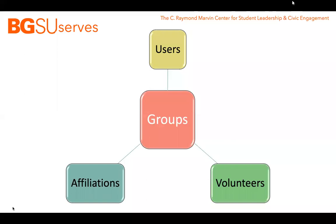Before we get into the details of profile management, event management, or volunteer management in BGSU SERVS, we need to cover a few terms that have specific meanings in the GivePulse platform. As you can see from this slide, groups are the center of the GivePulse platform. Groups are the name for organizations or companies. Each of you are a user within at least one group. Groups have affiliations with other groups, and of course groups need volunteers for a variety of roles, from events to office and programmatic support.